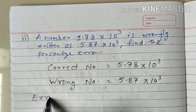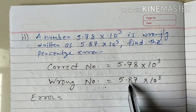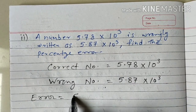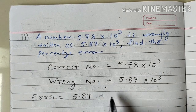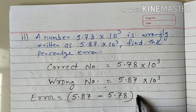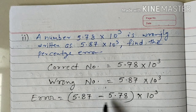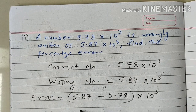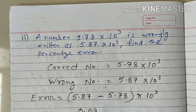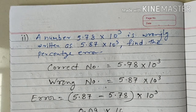Let us find out the error between these two numbers. Make a subtraction of these two numbers — greater number minus smaller number. That is 5.87 minus 5.78, and for both numbers we take 10 raised to 3 as common. Subtraction of these two will be 0.09 multiplied by 10 raised to 3.